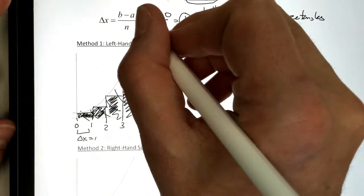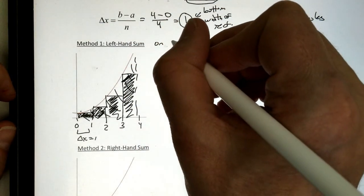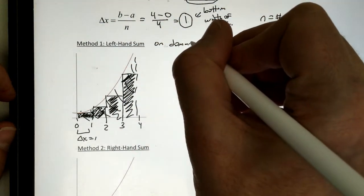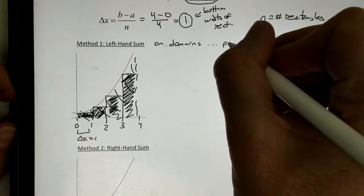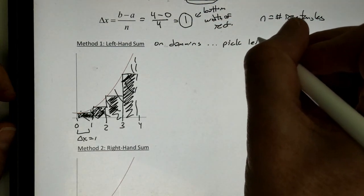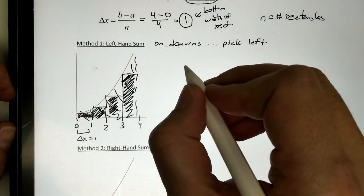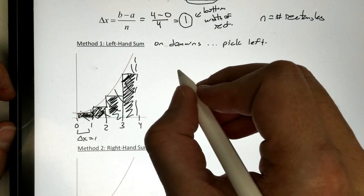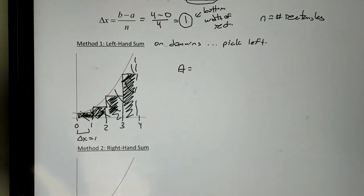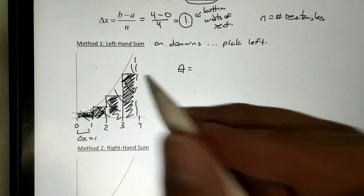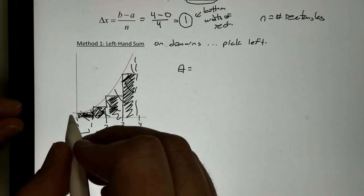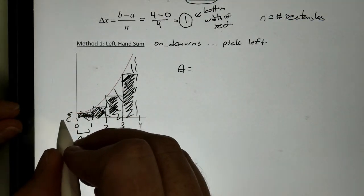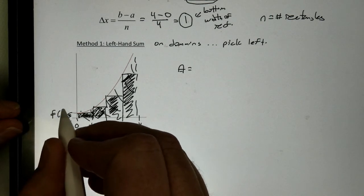Now, as you can tell, this isn't going to give us the exact area. But, remember, this is only an approximation technique. So, the left-hand says, on the domains, we're going to pick the left one.